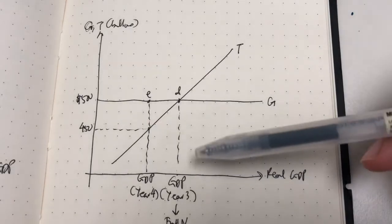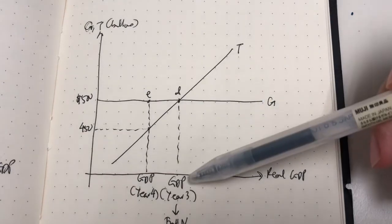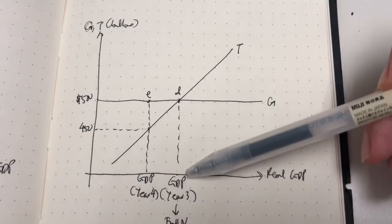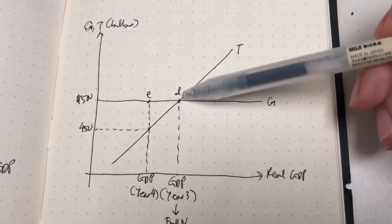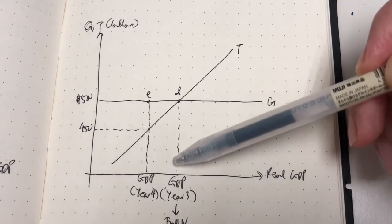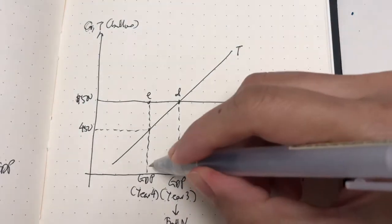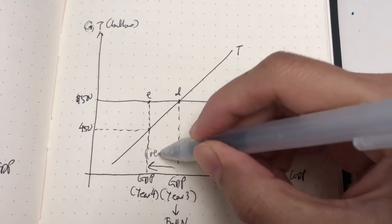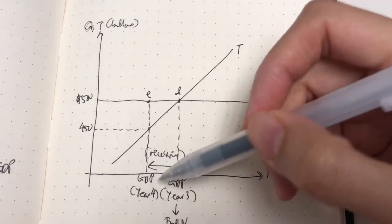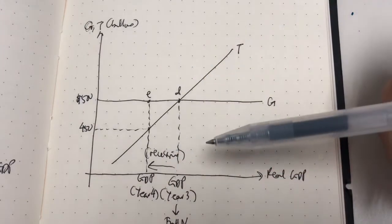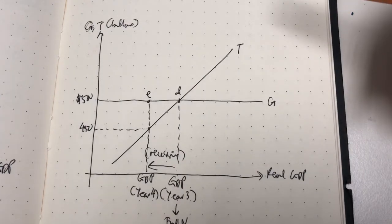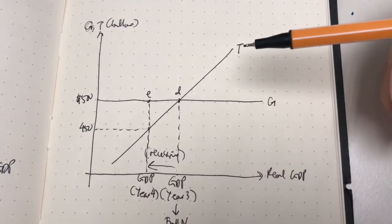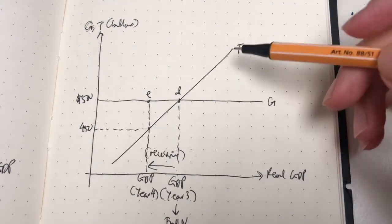Now let's move on to years three and four. At year three, we're at full employment level, so government spending and tax revenues are equal at $500 billion. In year four, a recession happened — falling output, falling GDP. But this time, the government took action by implementing expansionary fiscal policy. One option is to reduce taxation, which is what the government does this time, so the tax line is reduced to a new level.